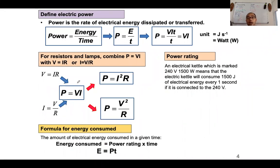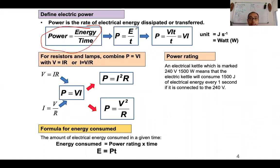Now for electrical power. Power is the rate of electrical energy dissipated or transferred — that is, P = E/t. We've learned this since Form 4 Chapter 2: power is energy over time, regardless of the type of energy. If we take E = VIT and divide by time, we get P = VI. Then using Ohm's law, we substitute to get P = I²R or P = V²/R.